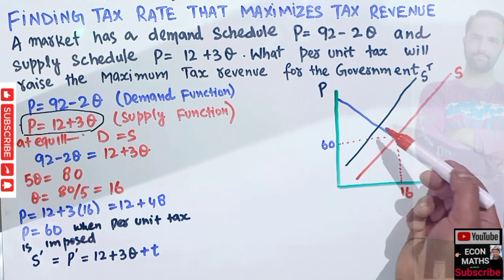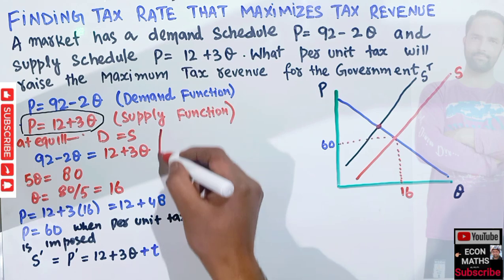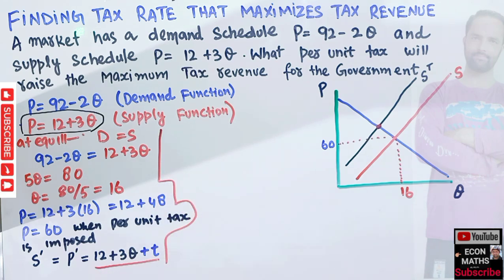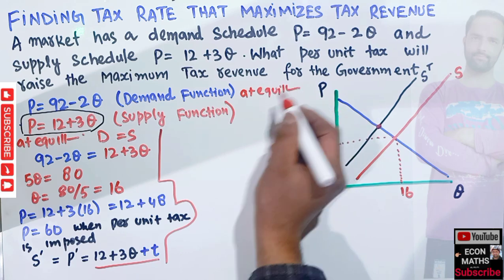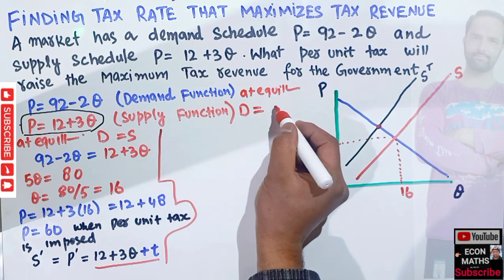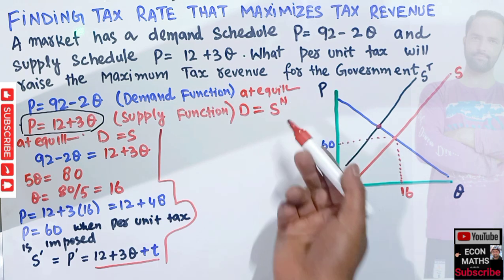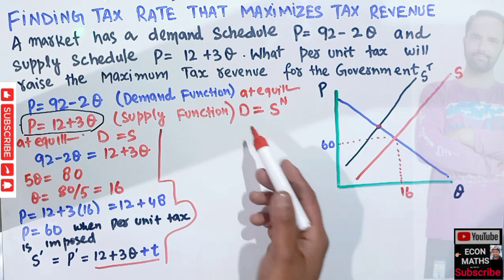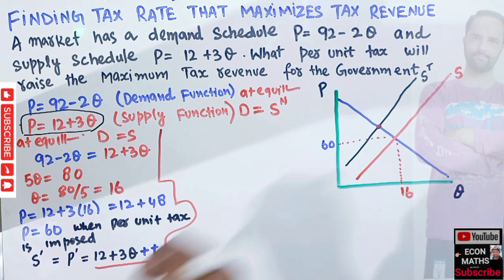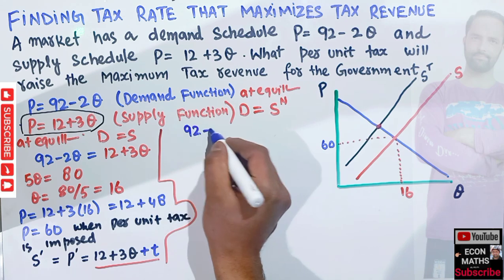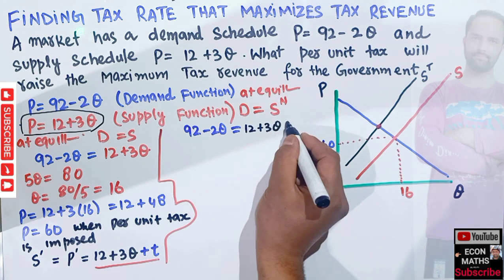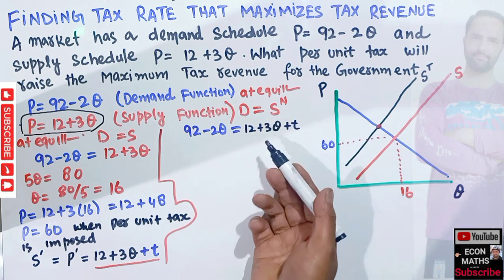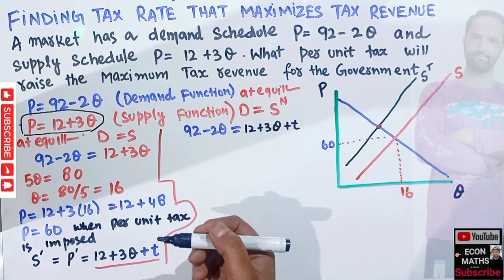At the new equilibrium, the demand and new supply functions intersect again. We equate the original demand function with the new supply function. So: 92 - 2Q = 12 + 3Q + t.